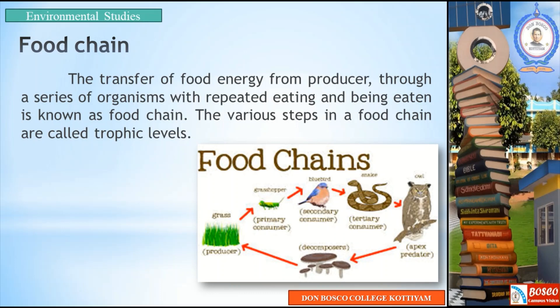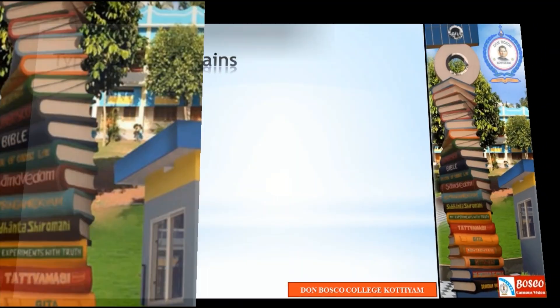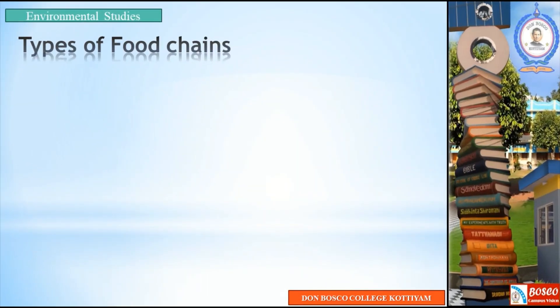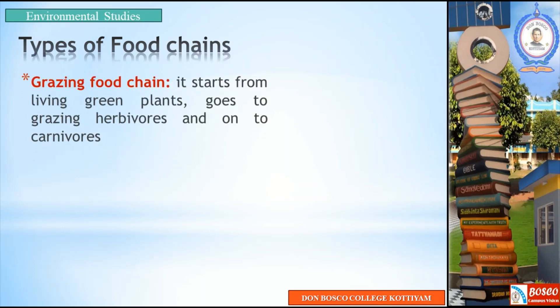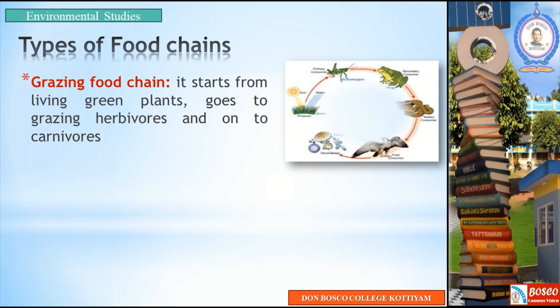There are mainly two types of food chain. The first one is the grazing food chain. It starts from living green plants, goes through grazing herbivores and on to carnivores.